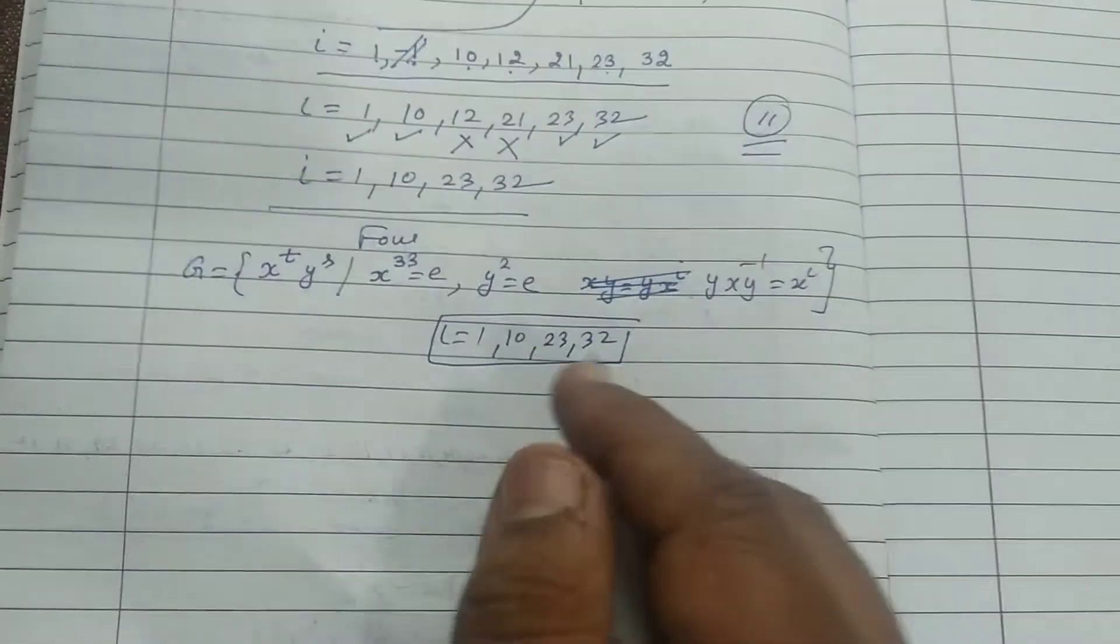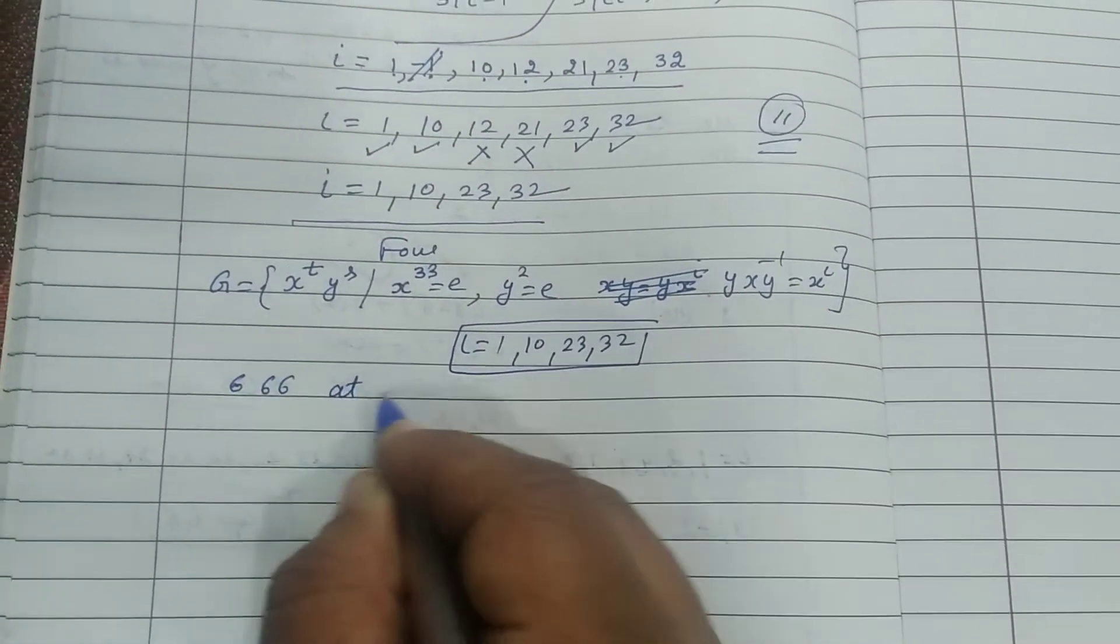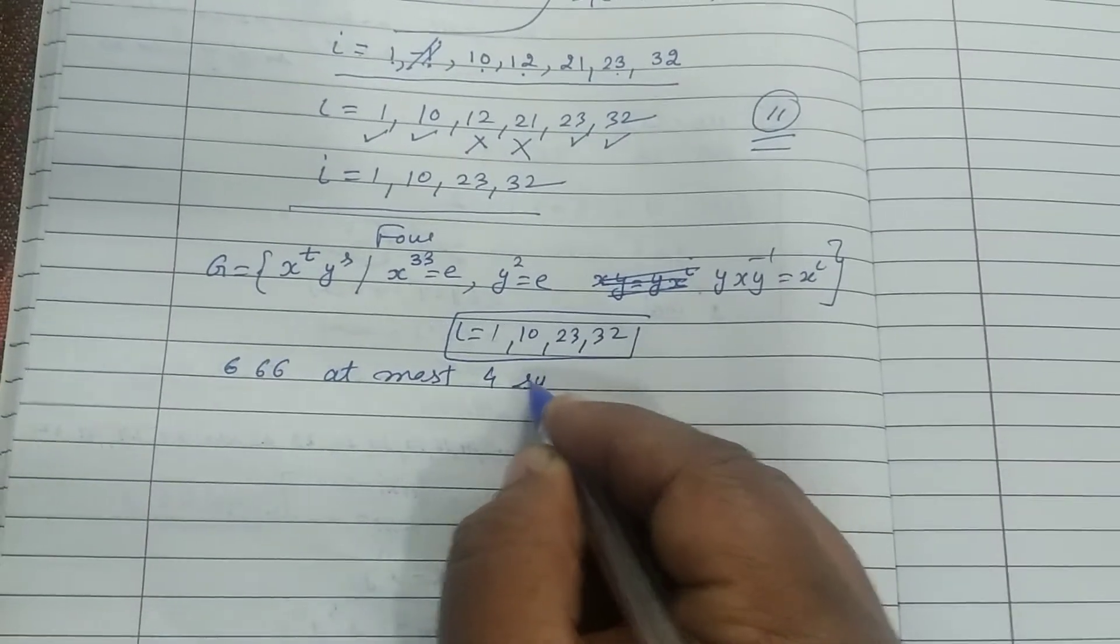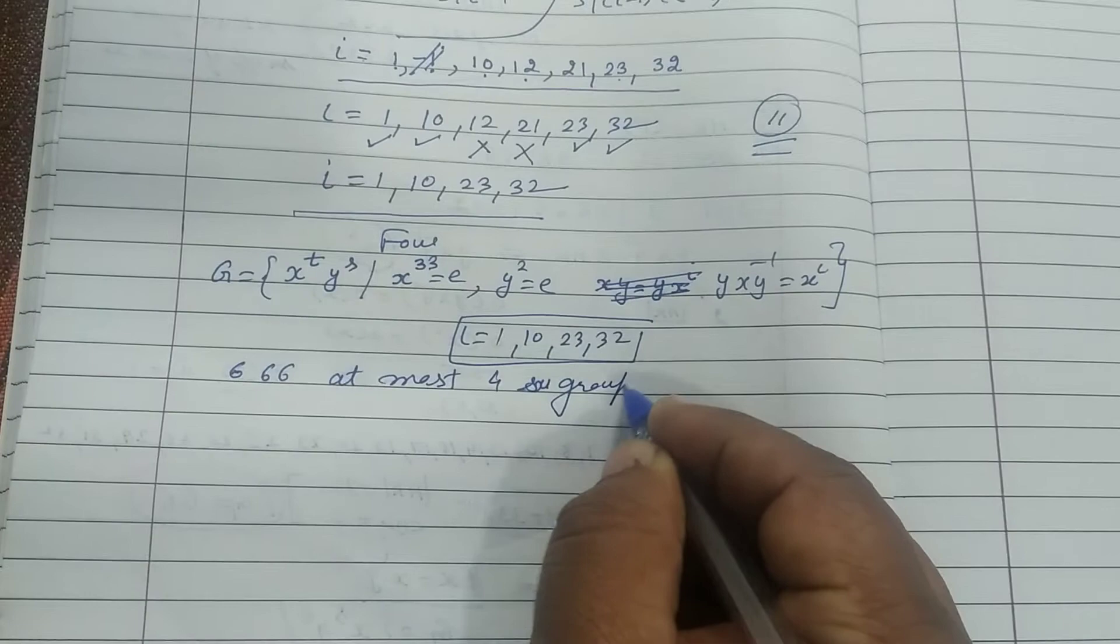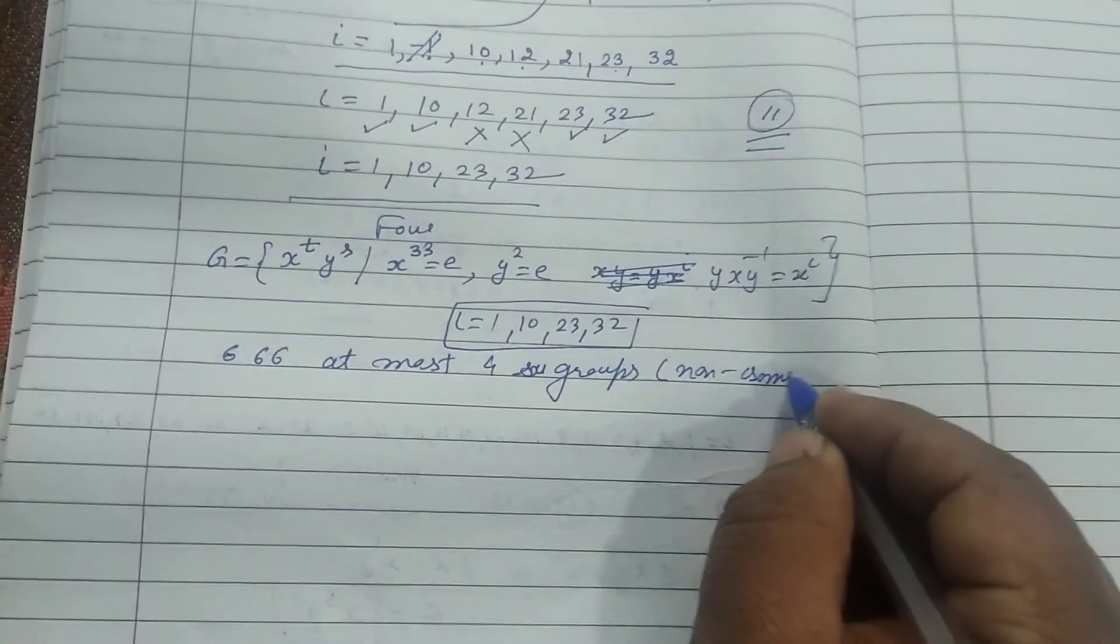What this implies: x, 66 order ke, at most four subgroups, groups ho sakte hain, wo bhi kaun se non-isomorphic.